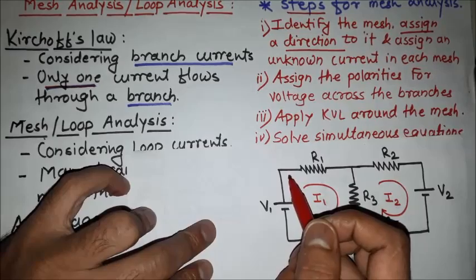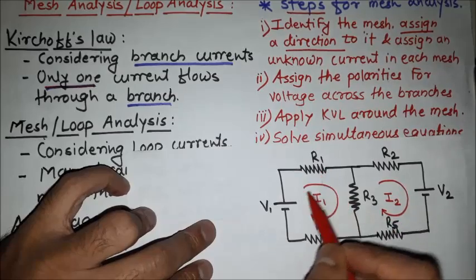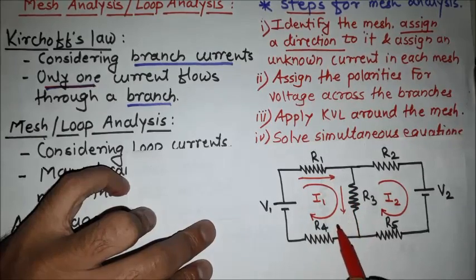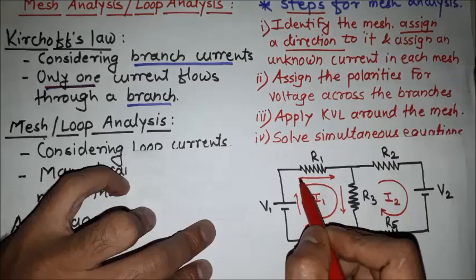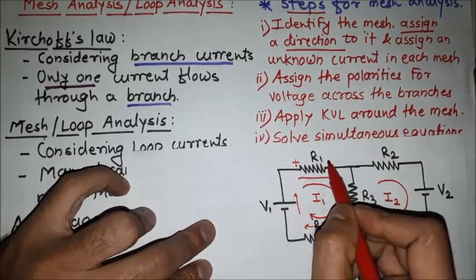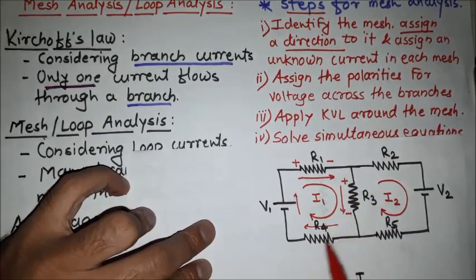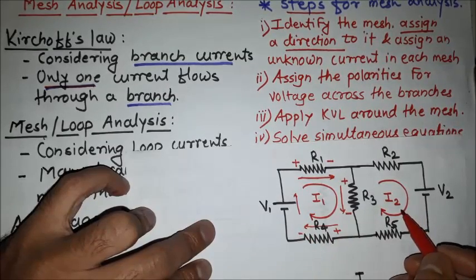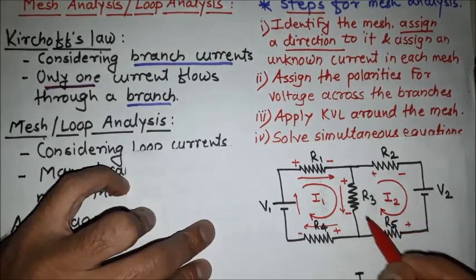The second step is to assign the polarities for the voltage across the branches. As we have seen in KCL and KVL, if we consider the clockwise current direction flowing through the resistances and voltage sources, the starting terminal of the current is positive and the end terminal is negative. Similarly, for current i2 we consider the sign conventions: plus minus, plus minus, plus minus.